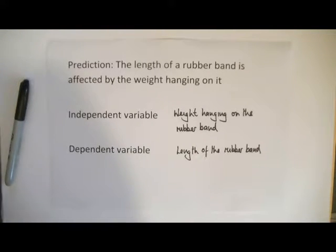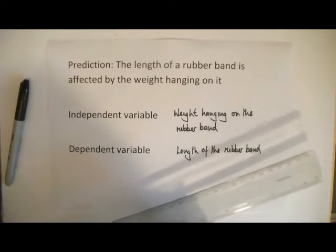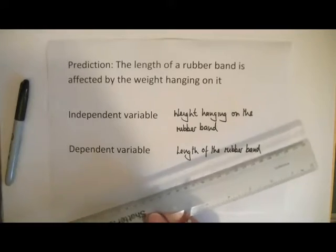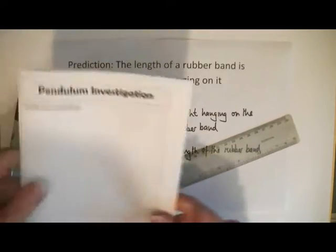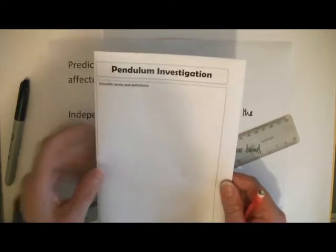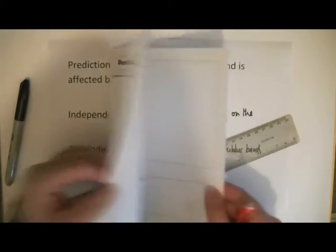Now the equipment I'm going to need to draw a table is a pencil and a ruler. And the place where you're going to draw your table is in your pendulum investigation booklet, where you've got your scientific terms there.